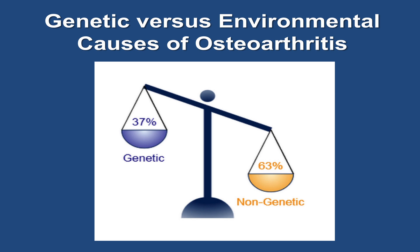We mentioned that genetics are a risk factor for osteoarthritis. The majority of osteoarthritis cases are caused by a combination of multiple genes, lifestyle factors, and the environment. It is estimated that about 37% of the risk of osteoarthritis in the Caucasian population is due to differences in genetic risk factors, while the remaining 63% of the risk is due to differences in non-genetic risk factors, like body mass index.